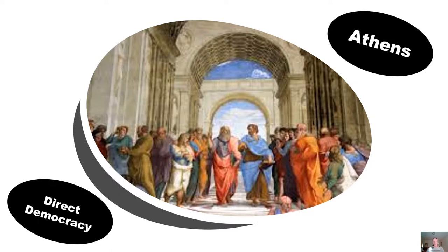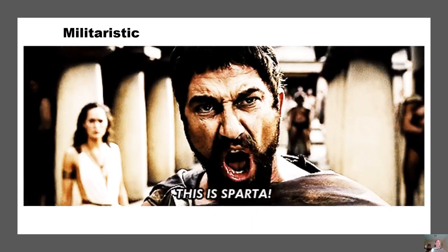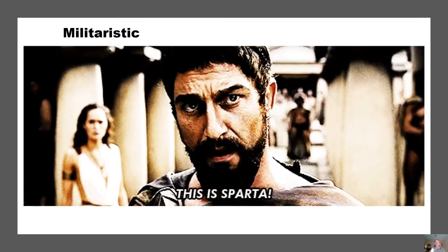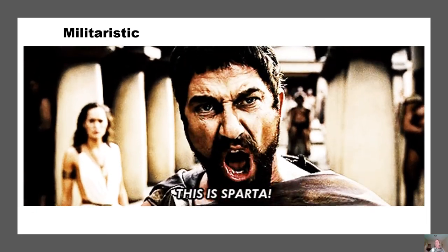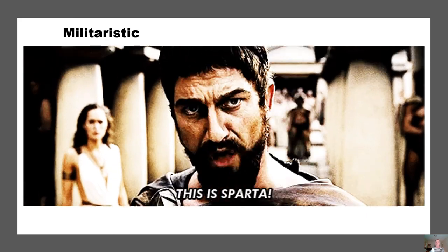Athens and Sparta were both very different. One of the largest contributions of Athens was direct democracy — the first place that democracy was practiced. Direct democracy means the male citizens would all get together and discuss and vote on laws, taxes, etc. Sparta was very different. Athens was about democracy, learning, and culture, while Sparta was very militaristic. Boys at the age of 7 would be taken from home and sent to military academies where they would train 24/7 until they were ready to be soldiers.